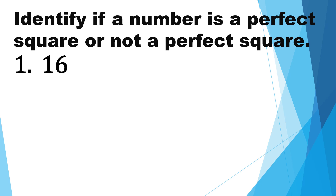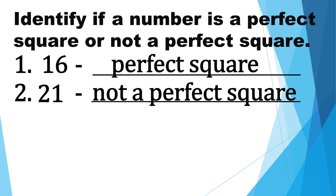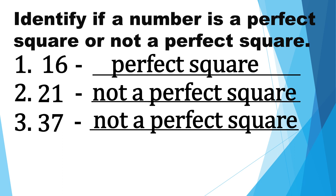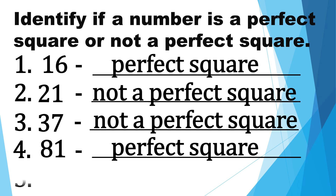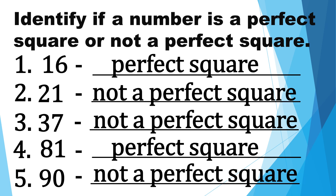Number one: sixteen. Sixteen is a perfect square. Number two: twenty-one. Twenty-one is not a perfect square. Number three: thirty-seven. Thirty-seven is not a perfect square. Number four: eighty-one. Eighty-one is a perfect square. Number five: ninety. Ninety is not a perfect square.